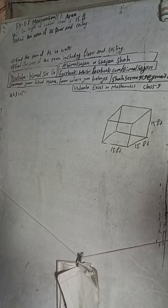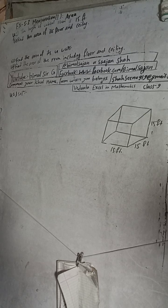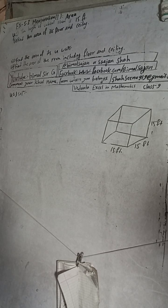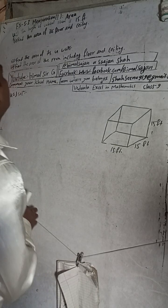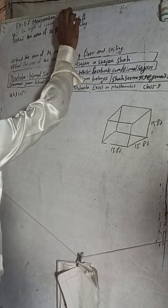Hi class 9 and 10 students, welcome back to Bimalsarji YouTube channel. This is question number 4C, exercise 5.3, Mensuration. The first part is area — Vedanth Excel in Mathematics class 9. The question is: find the area of its floor and ceiling.